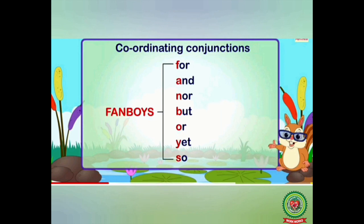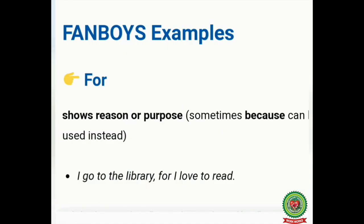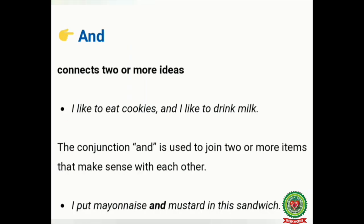Now we'll discuss all these conjunctions in detail with examples. The first coordinating conjunction is 'for.' 'For' is used to show reason or purpose. For example: 'I go to the library, for I love to read.' Here the conjunction 'for' is used to show the reason why I want to go to the library.